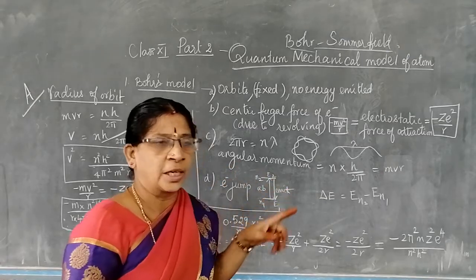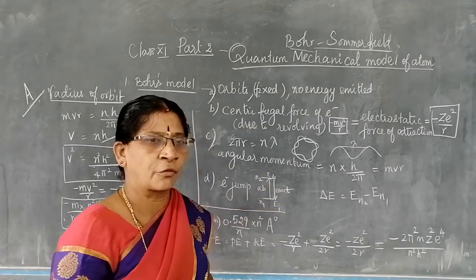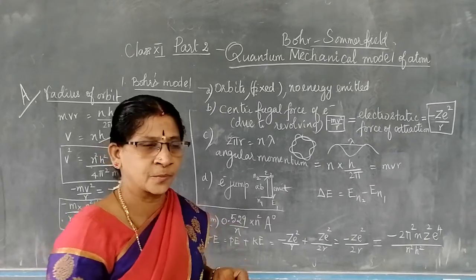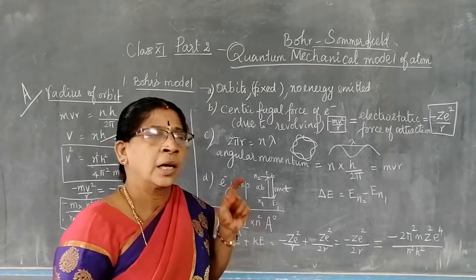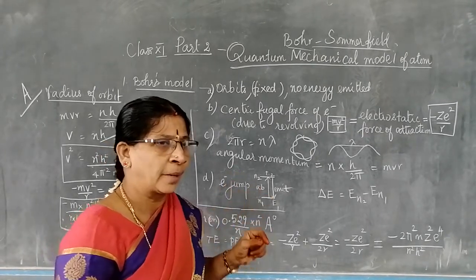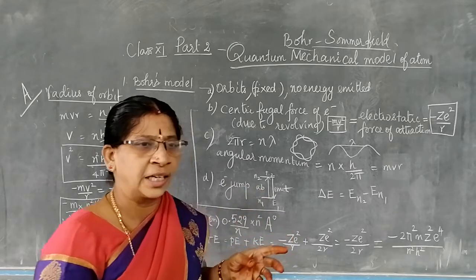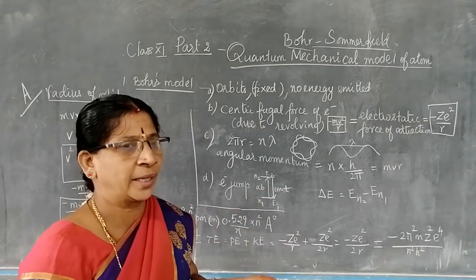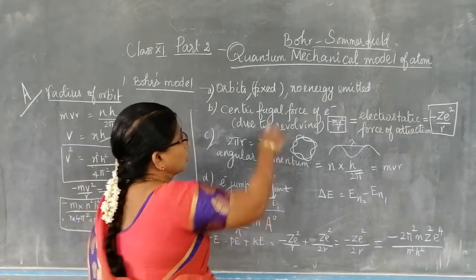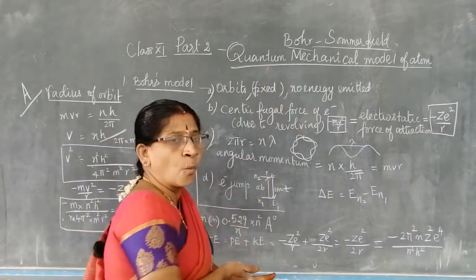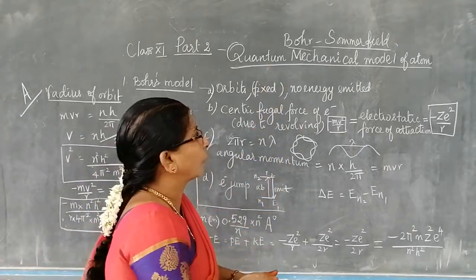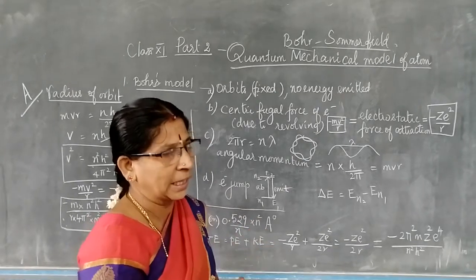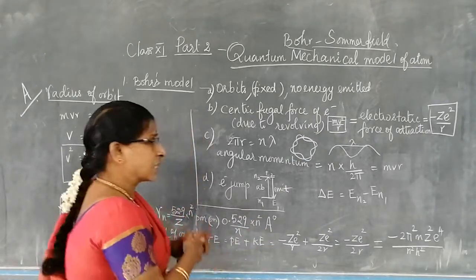Today we are going to see Bohr's model of an atom and the quantum mechanical model of an atom, and how it arises. As we all know, Rutherford's model of an atom attained failure due to its inability to explain the stability of an atom. So today we are going to see Bohr's model of an atom, which is based completely on the quantum mechanical model of an atom.